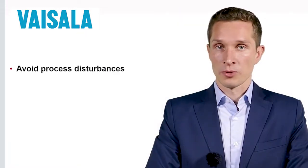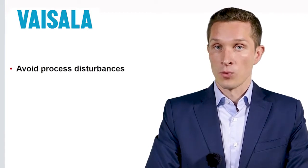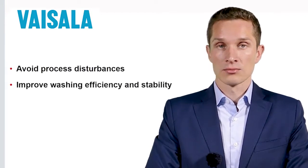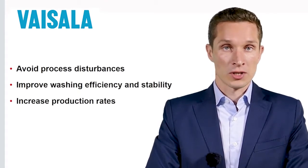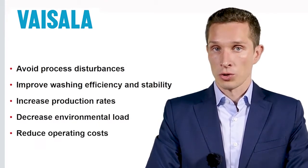Mills can detect and avoid process disturbances, improve washing efficiency and stability, increase production rates, decrease the environmental load, and substantially reduce operating costs. Brown stock washing optimization with K-Patents offers improved economics for the whole mill, resulting from great energy and chemical savings and from a surplus of vapor which ensures self-sufficiency of the mill and which can be used to generate electricity to sell to the local grid.